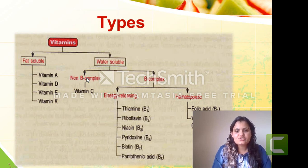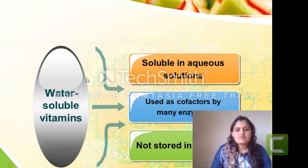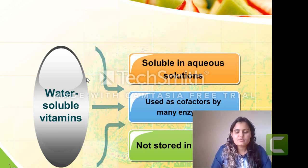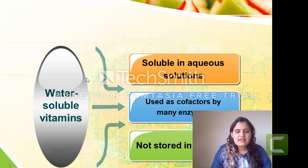In vitamin B-complex, they are ranging from vitamin B1 to vitamin B12. Water-soluble vitamins are soluble in water and they are used as a co-factor by many enzymes. There are so many metabolic reactions taking place in our body, and they act as co-factors for many enzymes. The most important thing is they are not stored in our body — they are excreted in urine, meaning we have to consume them regularly.